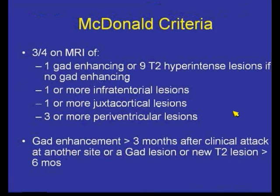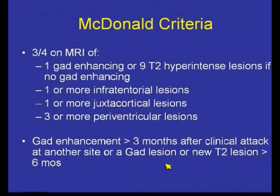One or more infratentorial lesions — so we count how many lesions are in the brainstem and cerebellum, middle cerebellar peduncle, et cetera. We count whether or not there are juxtacortical lesions, which is the subcortical white matter, or three or more periventricular lesions. You must have three of four of these for the McDonald criteria. Regarding gadolinium enhancement, we're talking about over three months after a clinical attack at another site, gadolinium-enhancing lesions, or new T2 lesions. These criteria should be posted in your review room to help report MS cases in a way that assists clinicians in deciding whether the McDonald criteria are met.